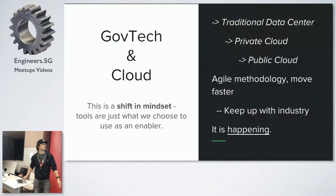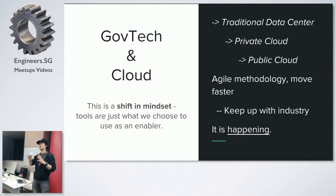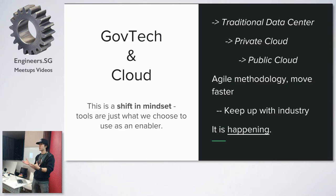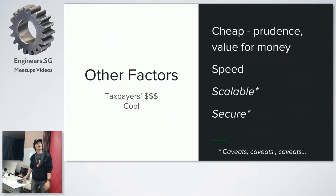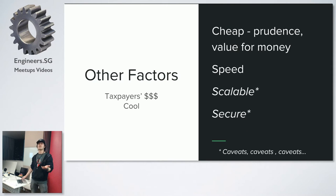Traditionally we used data centers — everything is tight, you have to buy a rack or hardware. We all know why moving to the cloud is good. The government is trying to be as agile as the industry. We first built our own private cloud, which was cost-inefficient and slow, and now we're exploring public cloud. Other factors driving this move: compute resources on public cloud are cheap, we want to be prudent with taxpayers' money, it's scalable, and we have to consider security and balance risk accordingly.